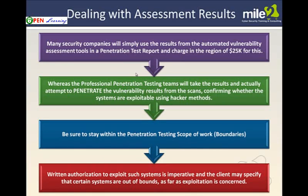Once you have run these vulnerability assessment tools, you need to deal with the results. Many security companies will simply use the results from automated vulnerability assessment tools in a pen testing report and charge quite a bit of money — $25,000 — but realize that's not really sufficient. Running a vulnerability assessment tool can give you false positives; not everything it comes back with is necessarily a true problem. It would be best to follow up with penetration testing, also known as ethical hacking. You still want to come in and see what you can actually punch through, rather than simply running the vulnerability scan and accepting that Saint or Nessus or Retina said these were your problems — in actuality, they may not be true. They need to be tested.